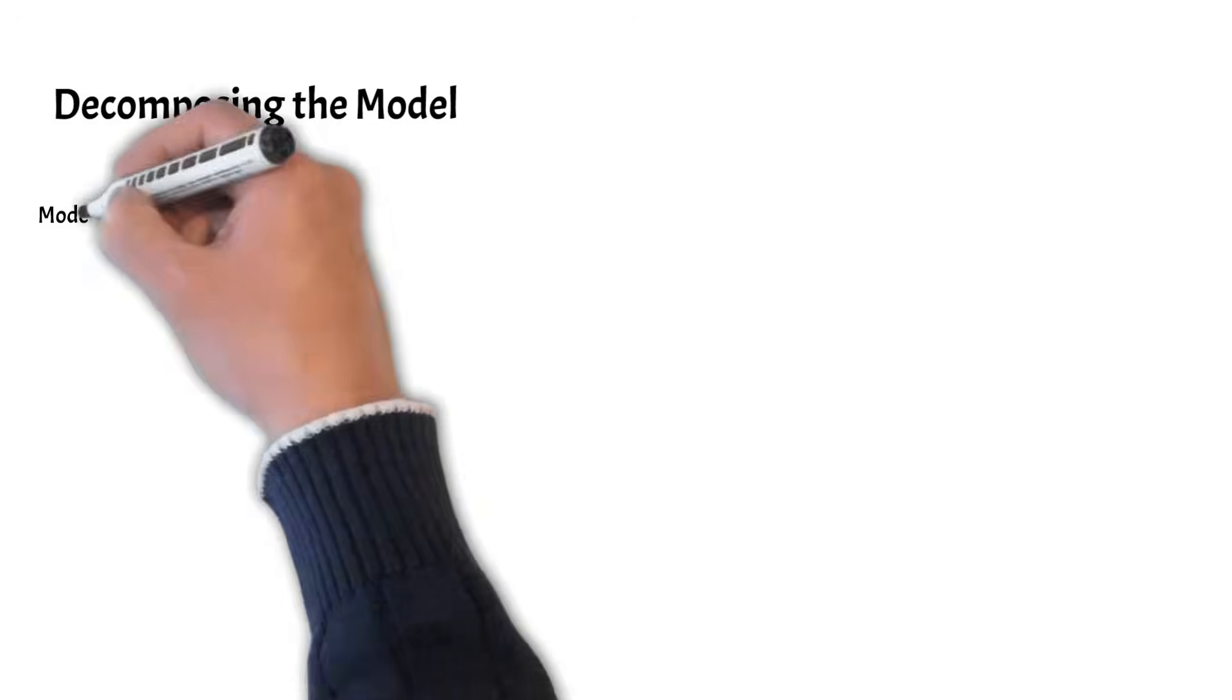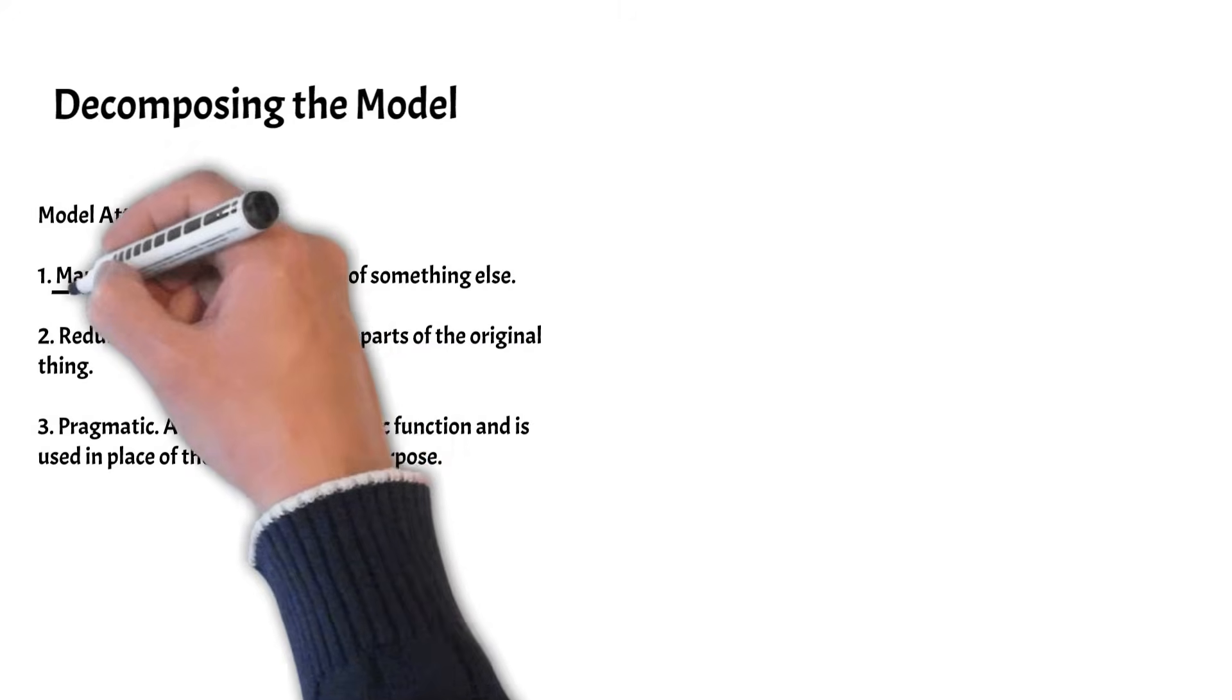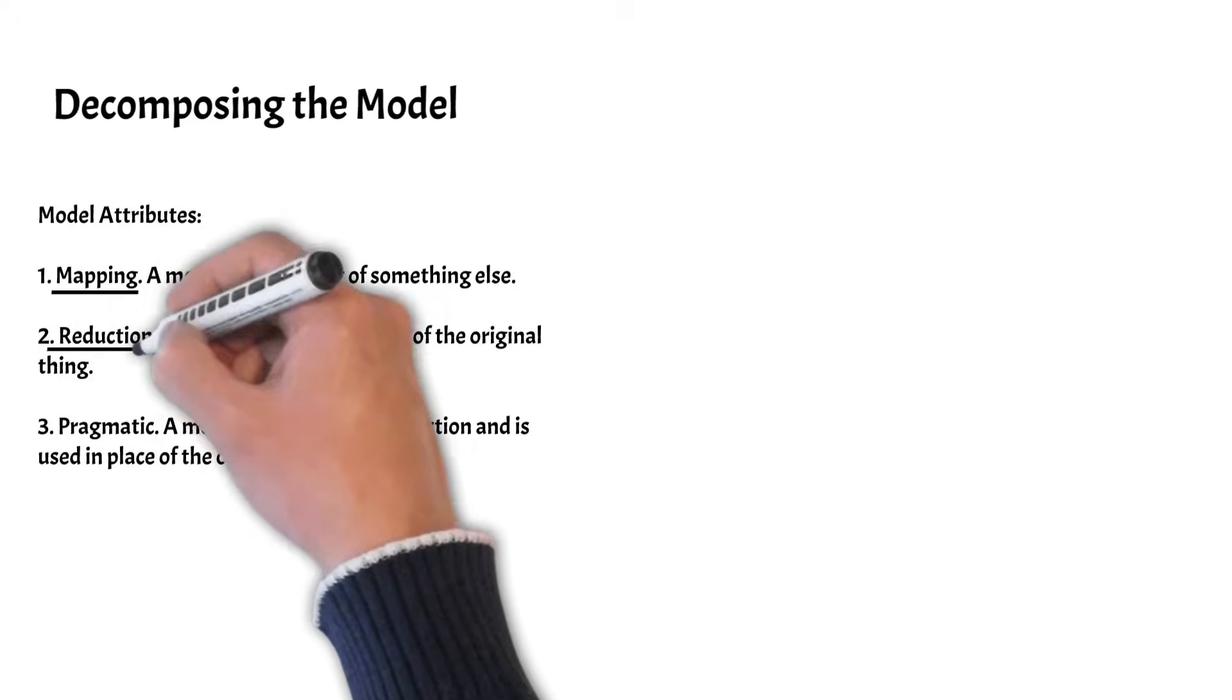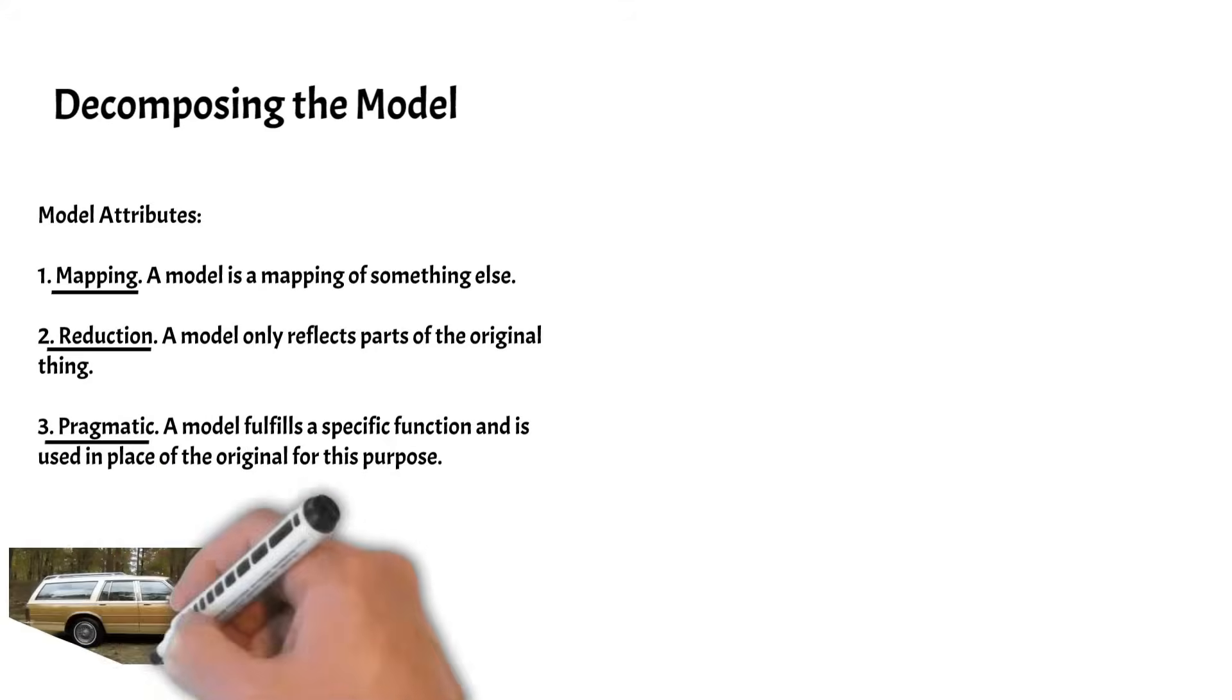Models have three distinct attributes. Model attributes include: 1. Mapping to some reality. 2. A reduction from that reality. 3. Pragmatic, or results driven, approach.